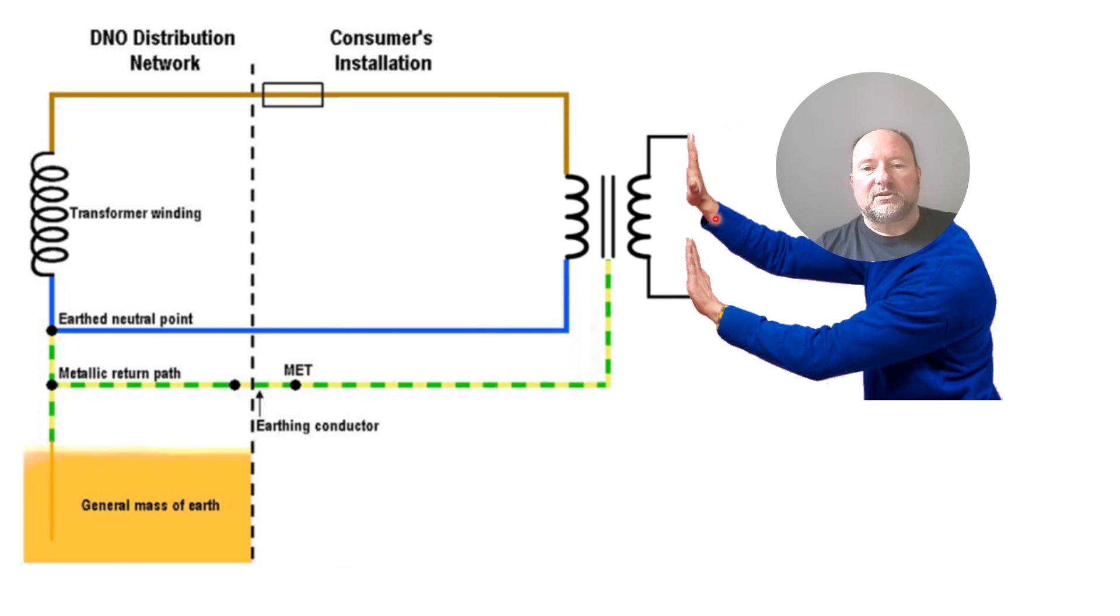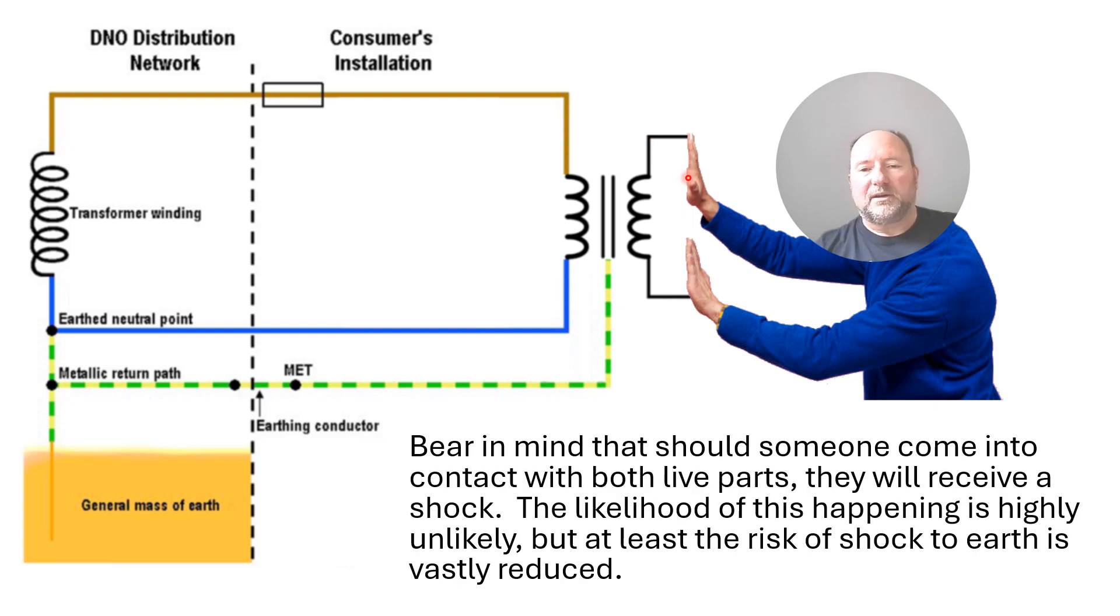Now, make no mistake that if you were to come into contact with both these live parts, you'll get a shock because certainly in the case of a shaver point transformer, there's still 230 volts across these two points. So the shock will take a path down the arm across the chest, affecting the heart and the breathing, back up the other arm and back to this point. So that is the path the current will take should you come into contact with both the live parts.